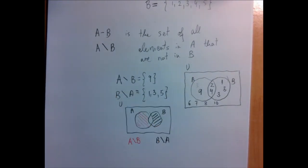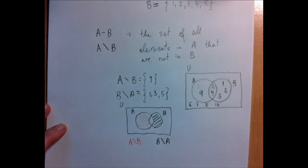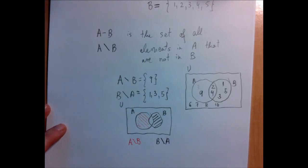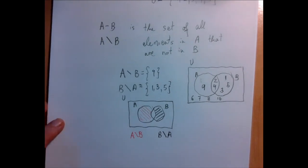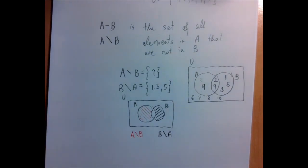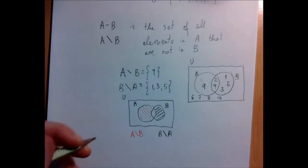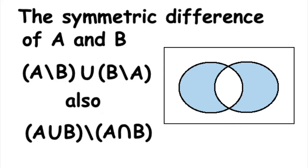So this is basically subtraction between sets. Kind of cool — when you take the union of A minus B and B minus A, that's called a symmetric difference. It's sort of the union with the intersection taken out. Thank you for watching.